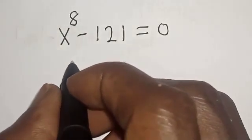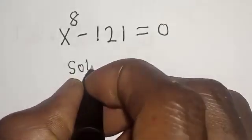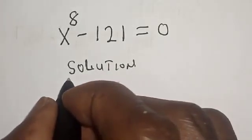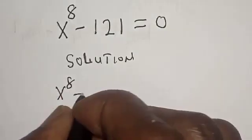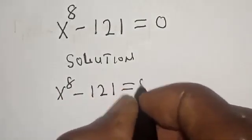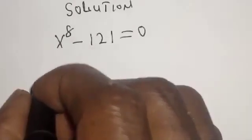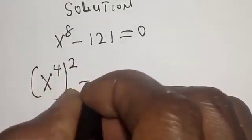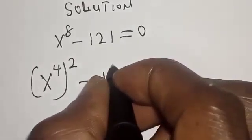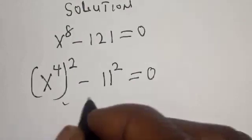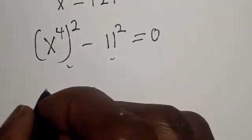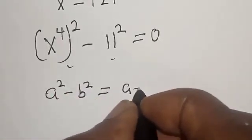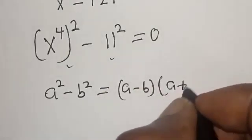Solution: x to the power 8 minus 121 equals zero. We rewrite x to the power 8 as x to the power 4, squared, minus 121, which is 11 squared, equals zero. This is a difference of two squares, where a squared minus b squared equals a minus b multiplied by a plus b.